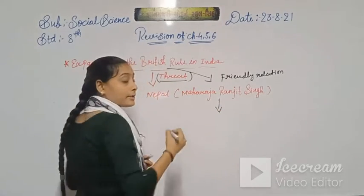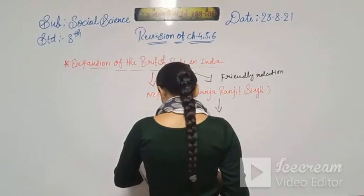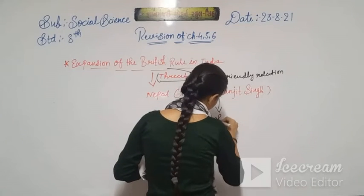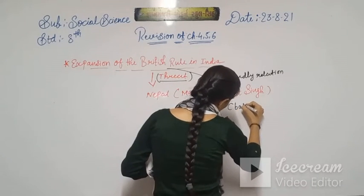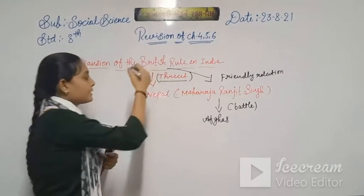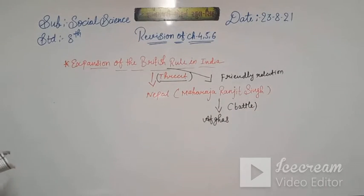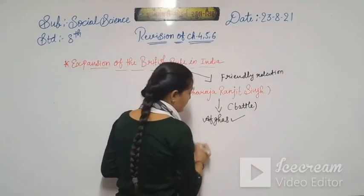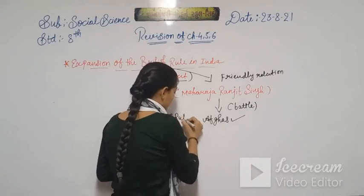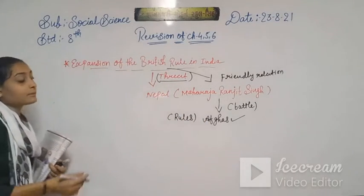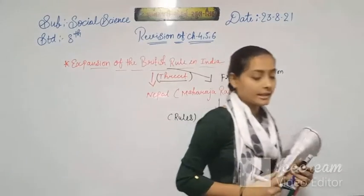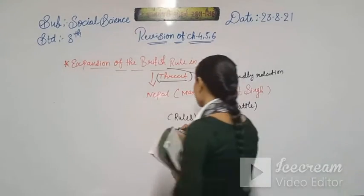Maharaja Ranjit Singh helped the British fight against the Afghans. In the battle against the Afghans, it was Maharaja Ranjit Singh who helped the British. Then they established their rule after the battle in Afghanistan as well. They became rulers in Afghanistan. The Sikh kingdom — we can say that is the kingdom of Ranjit Singh.